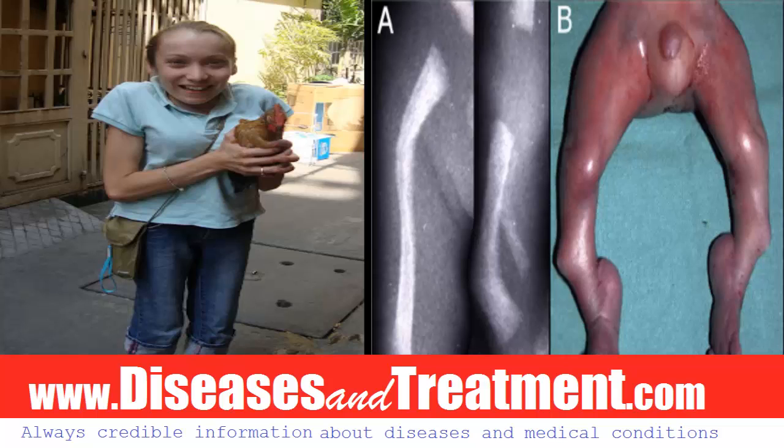The term Campomelic comes from the Greek word for bent limb. Affected individuals are typically born with bowing of the long bones in the legs, and are occasionally born with bowing in the arms as well. Bowing can cause characteristic skin dimples to form over the curved bone, especially on the lower legs. People with Campomelic Dysplasia also usually have short legs.